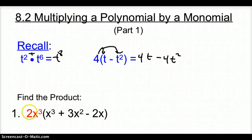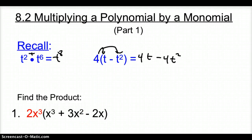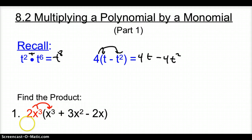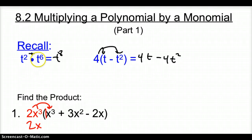For number one, we have 2x cubed — that's the monomial — times the polynomial x cubed plus 3x squared minus 2x. I'm going to take this 2x cubed and multiply it times x cubed. When I multiply my numbers, I have a 2 (there's a 1 in front of the x cubed, so it's 2). Now x to the what power? Remember when we multiply the same variable, we add the exponents, so I get an exponent of 6.